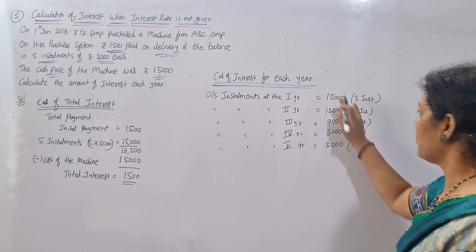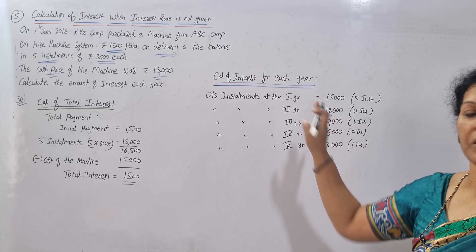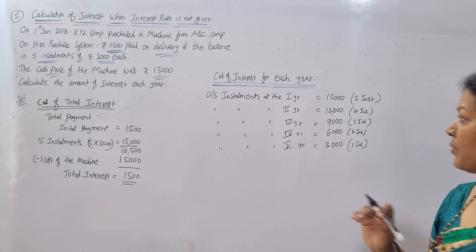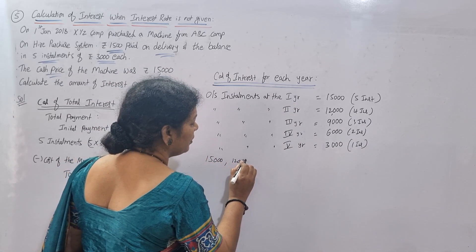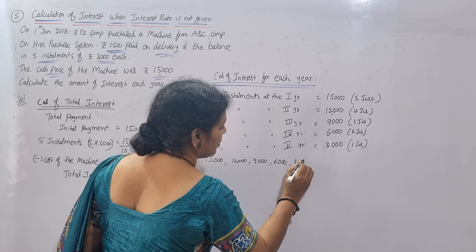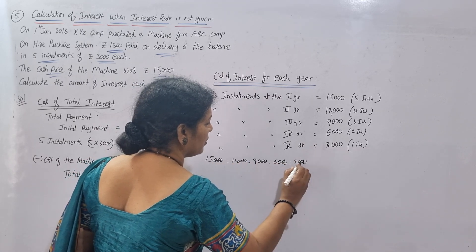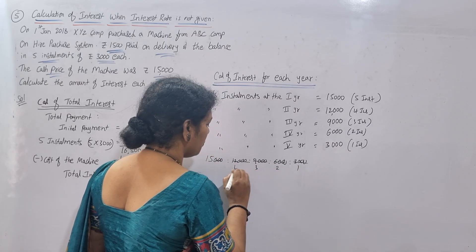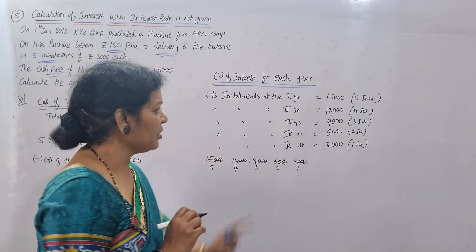So the outstanding installment amounts for each year are: Year 1 = ₹15,000, Year 2 = ₹12,000, Year 3 = ₹9,000, Year 4 = ₹6,000, Year 5 = ₹3,000. We can take the ratio of these values. The ratio is 15:12:9:6:3, which simplifies to 5:4:3:2:1, and the total is 5+4+3+2+1 = 15.